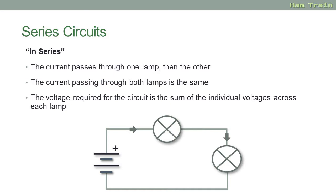This circuit has a battery and two lamps or bulbs. The current is flowing from the battery into the first lamp, then into the second lamp and then back to the other part of the battery. The current that's flowing through both lamps is the same, and the voltage that's required for the circuit is the sum of the individual voltages across each lamp. Sounds confusing but let's break it down.